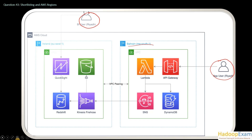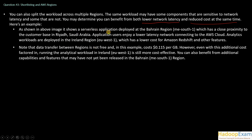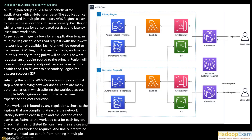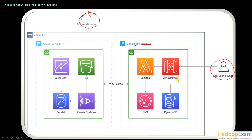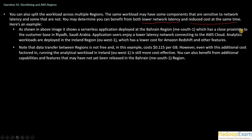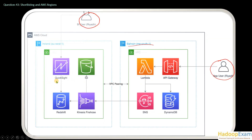As shown in the image, a serverless application is deployed in the Bahrain region — there is no EC2 instance. Lambda is deployed, API Gateway is deployed, an SNS topic is deployed, and DynamoDB is deployed. This Bahrain region has close proximity to the customer base in Riyadh, Saudi Arabia, so application users enjoy lower latency connecting to the AWS cloud. Analytics workloads are deployed in the Ireland region (EU-West-1), which has lower cost for Amazon Redshift and other features. Those users need QuickSight, Redshift, Kinesis, Firehose, and S3.